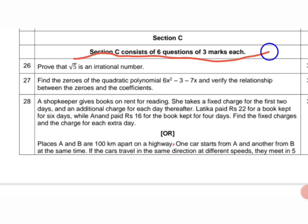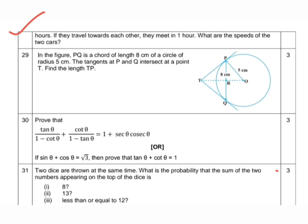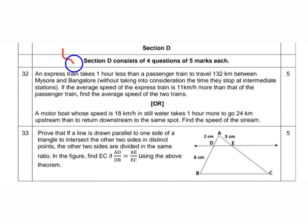Question number 26, question 27, question 28 internal choice is there. This internal choice question has Part A and B. Question number 29, question 30, and question number 31.